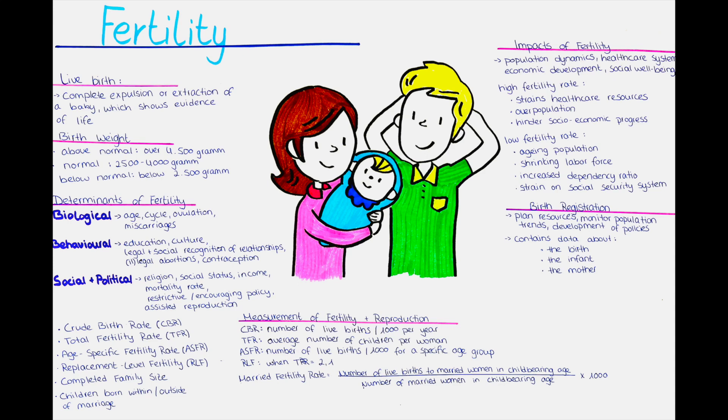Reasons for large birth weight are mainly maternal metabolic or genetic problems and mothers who are themselves constitutionally larger. Determinants of fertility refer to the factors or variables that influence a population's level of fertility, or the number of children born to individuals or couples within a specific population or time frame.